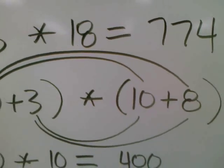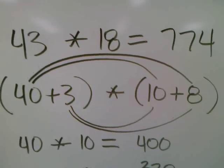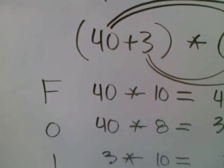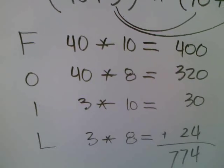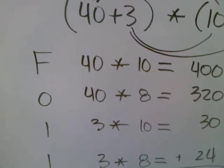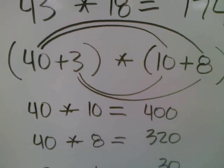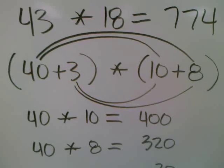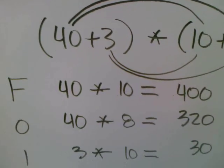Now that the problem has been separated into factors that are easier to multiply, the word FOIL will help you to complete all four multiplication problems that will result in the answer. The first letter F stands for first. The first numbers in the example problem are 40 and 10. Write down 40 times 10.